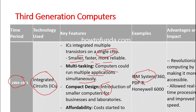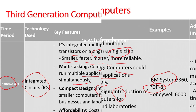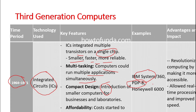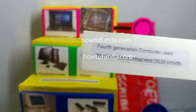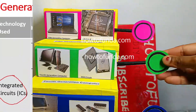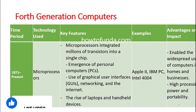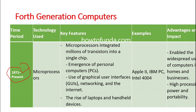Some examples of third generation computers are IBM System/360, PDP-8, and UNIVAC 6000 series. The fourth generation computer runs from 1971 to the present, making use of microprocessors. Microprocessors integrate millions of transistors into a single chip, and this era saw the emergence of personal computers from 1971 onwards.